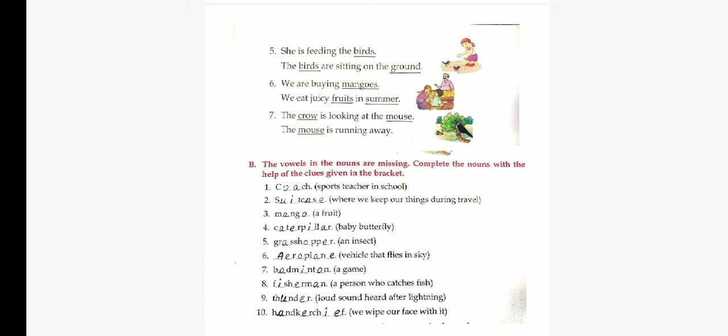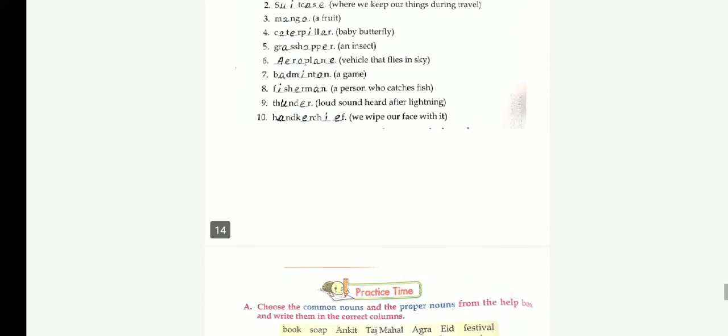Seventh one. A bat and ball game. Answer: Badminton. B-A-D-M-I-N-T-O-N. Badminton. Eighth one. A person who catches fish. Fisherman. F-I-S-H-E-R-M-A-N. Fisherman. Ninth one. Loud sound heard after lightning. Answer: Thunder. T-H-U-N-D-E-R. Thunder. Last one. We wipe our face with it. Answer: Handkerchief. H-A-N-D-K-E-R-C-H-I-E-F. Handkerchief.